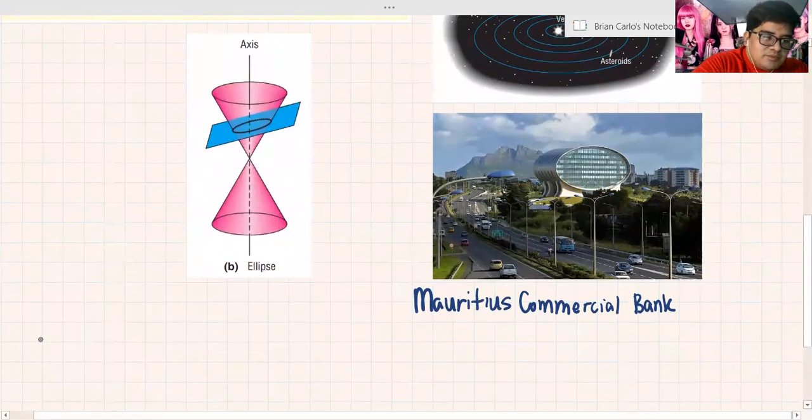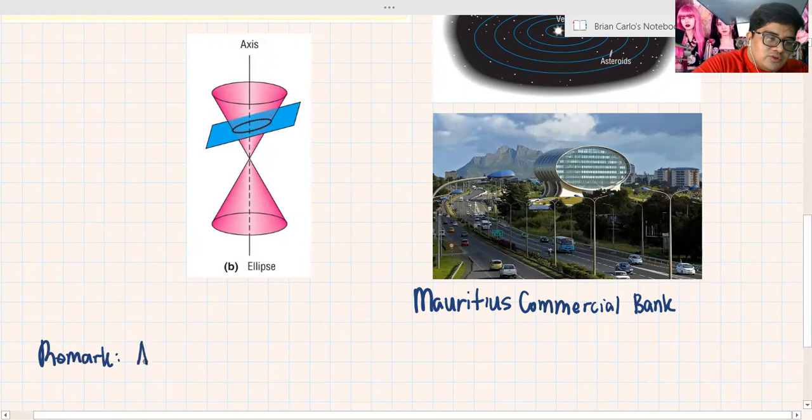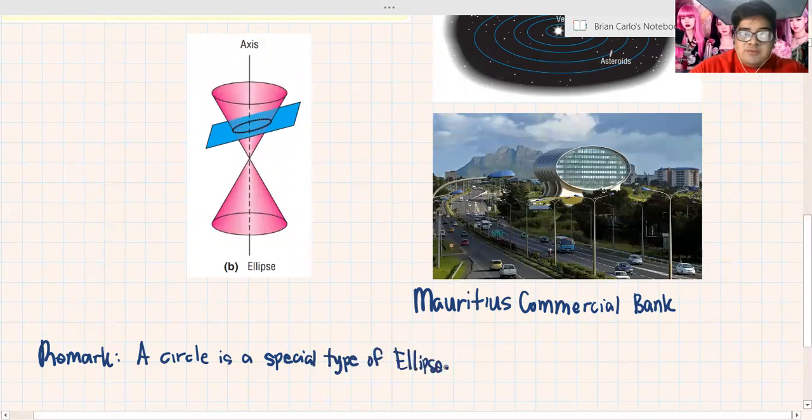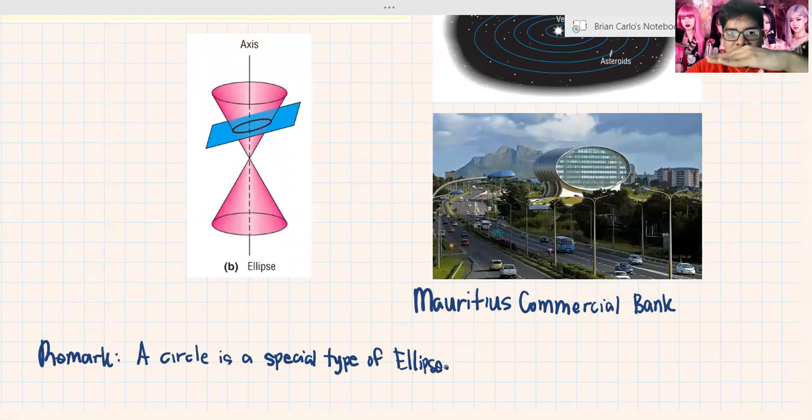By the way, a remark: a circle is a special type of ellipse. Because it's parallel to the generators, while the ellipse is tilted.